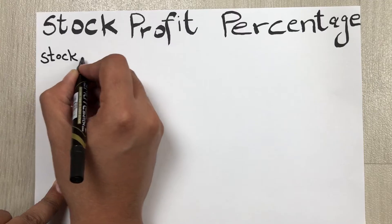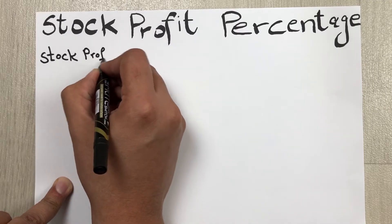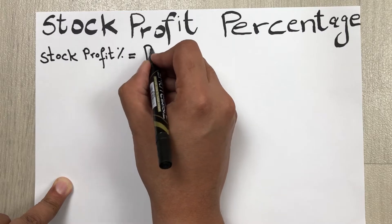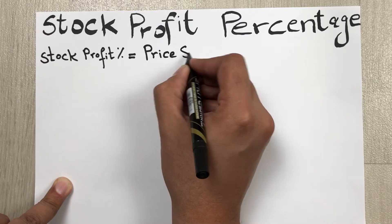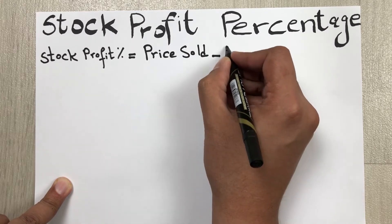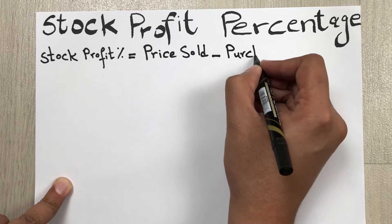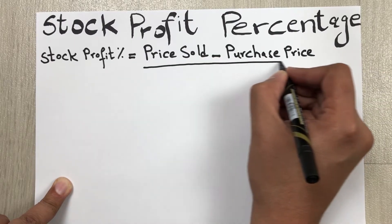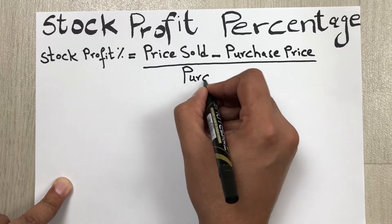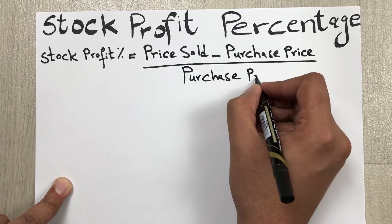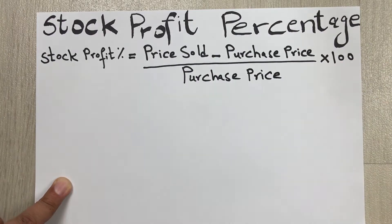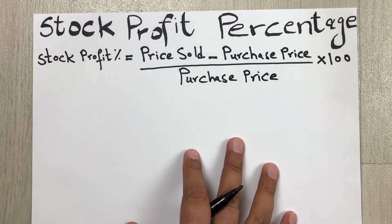Stock profit percentage is equal to: price sold minus purchase price, divided by purchase price, multiply by 100. This is the formula.